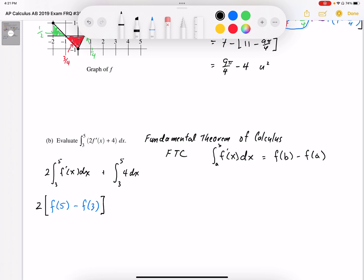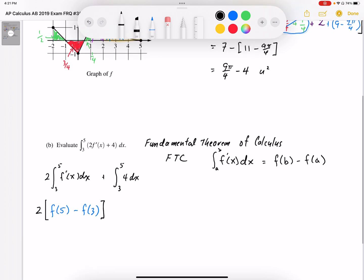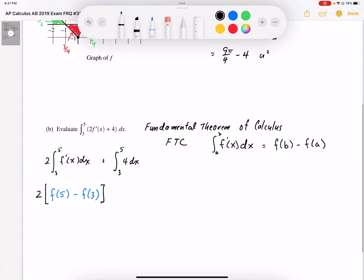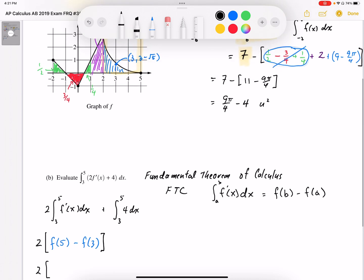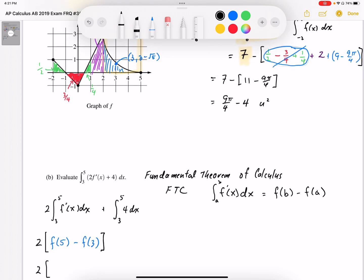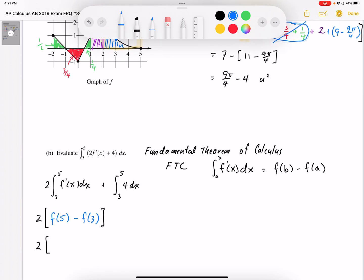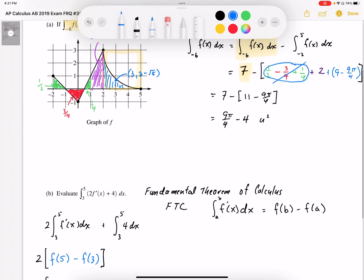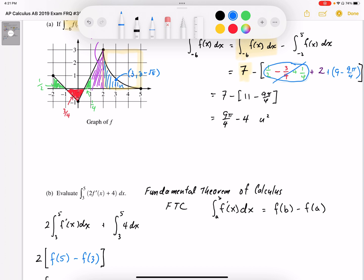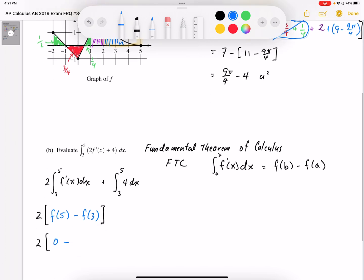I'll get these values from the f graph. Looking at the graph, when I take the f value of 5, it equals 0, minus the f value at x equals 3. They gave us the f value at 3 as 3 minus root 5.